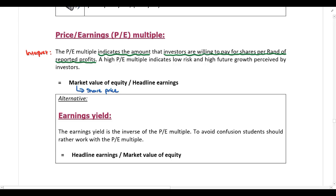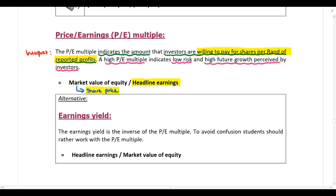We are looking at what investors are willing to pay for shares in the company relative to headline earnings — that is, per rand of reported profits or per rand of earnings. You want this multiple to be as high as possible because a high multiple means investors are willing to pay more per rand of reported earnings. A high multiple indicates a low risk investment and high future growth perceived by investors.